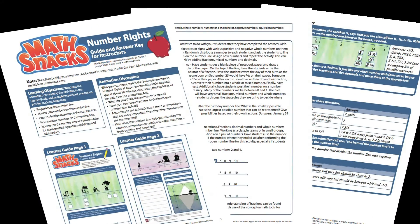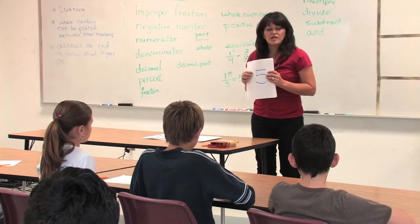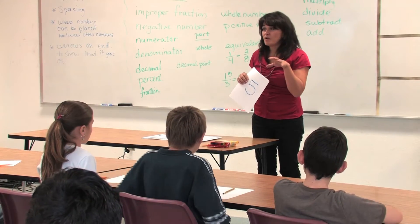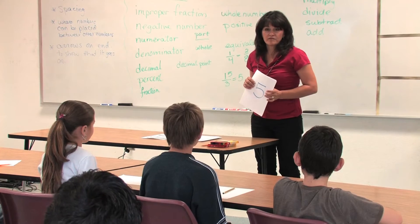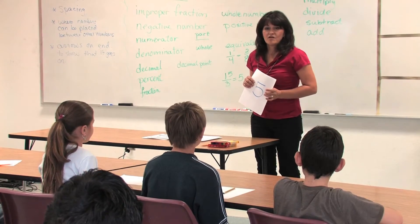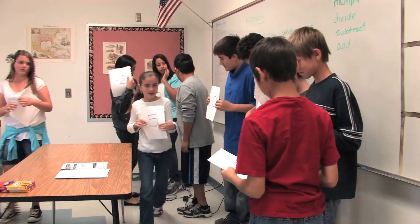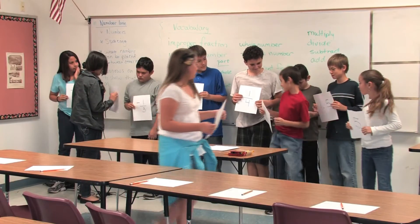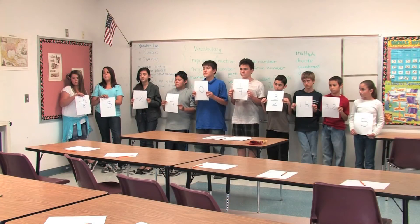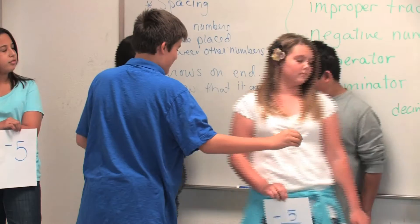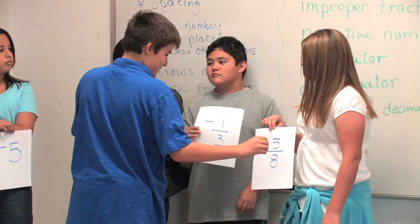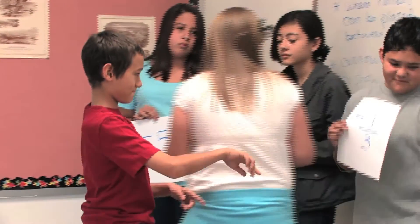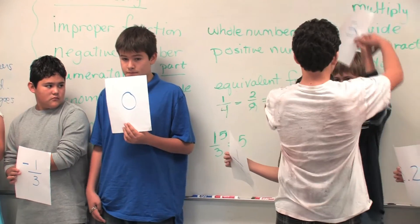After discussion, I get the students on their feet and we create a human number line — this idea and lots of other great activities are listed in the teacher's guide. I'm going to give you a number, and you all have to line yourselves up from the smallest number to the biggest number, but you can't talk. On this number line there are negative numbers, equivalent fractions, and decimals. Once it's complete, I ask the students if they want to make any changes — the key is that if they do, they have to explain why.